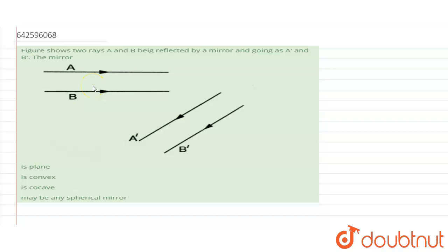Figure shows two rays A and B. This is the rays, this is A and this is B, reflected by a mirror and going as A dash and B dash. These are the reflected rays, A dash and this one is B dash.